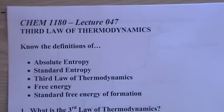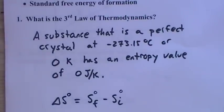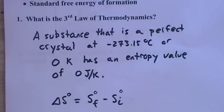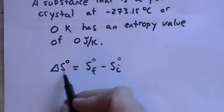Lecture 47: Third Law of Thermodynamics. The third law states that a substance in a perfect crystal — no impurities, no occlusions, no flaws, just one type of molecule in a nice set crystalline pattern — at zero Kelvin that substance is at zero entropy.